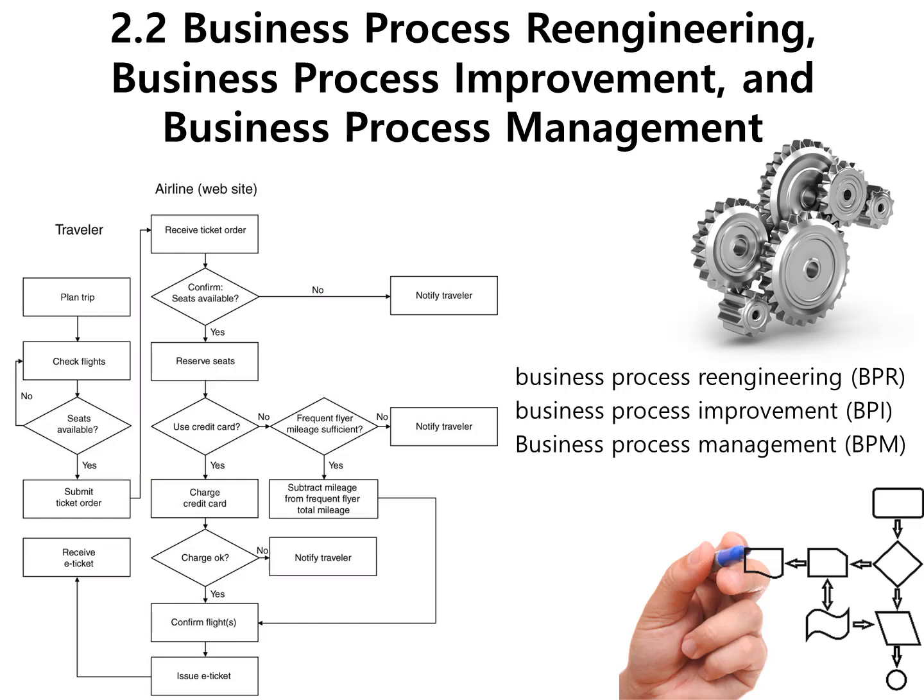Section 2.2 is about change. The two primary mechanisms for change in any organization are radical and incremental. Your book calls these business process reengineering (BPR), which is the radical form of change, and business process improvement (BPI), which is the incremental form of change. They are very different in that reengineering involves top-down change that is driven by top management.